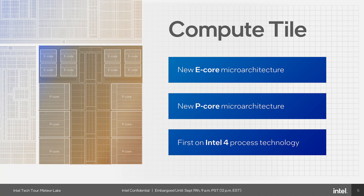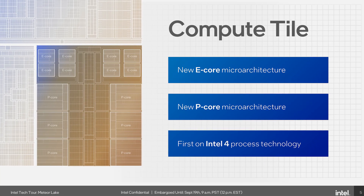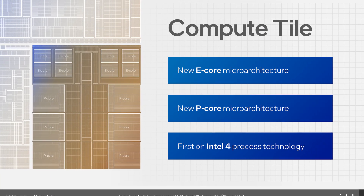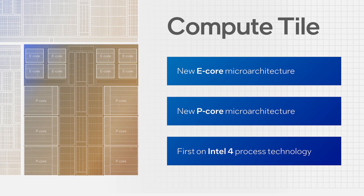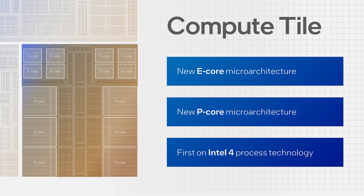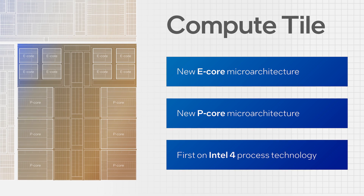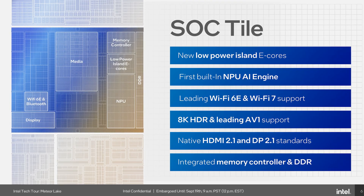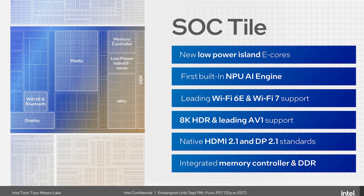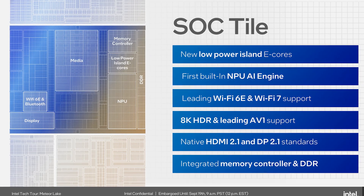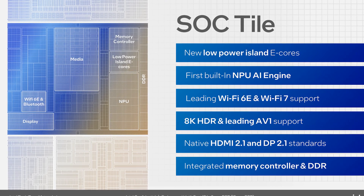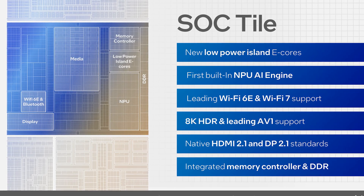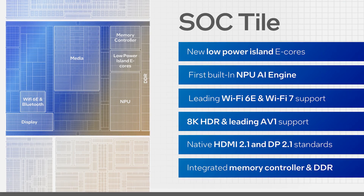The compute tile is probably the most familiar. It contains both the P-cores and the E-cores — basically like the top half of an Alder Lake or Rocket Lake chip — housing the main cores and cache. That is connected to the SOC tile, the system-on-chip tile, which is by far the most complicated die in the package, at least in terms of features.